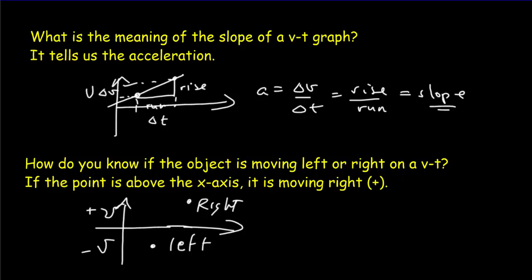So, basically, on a VT graph, if the point is above the x axis, the time axis, that is, it's going to be moving to the right.